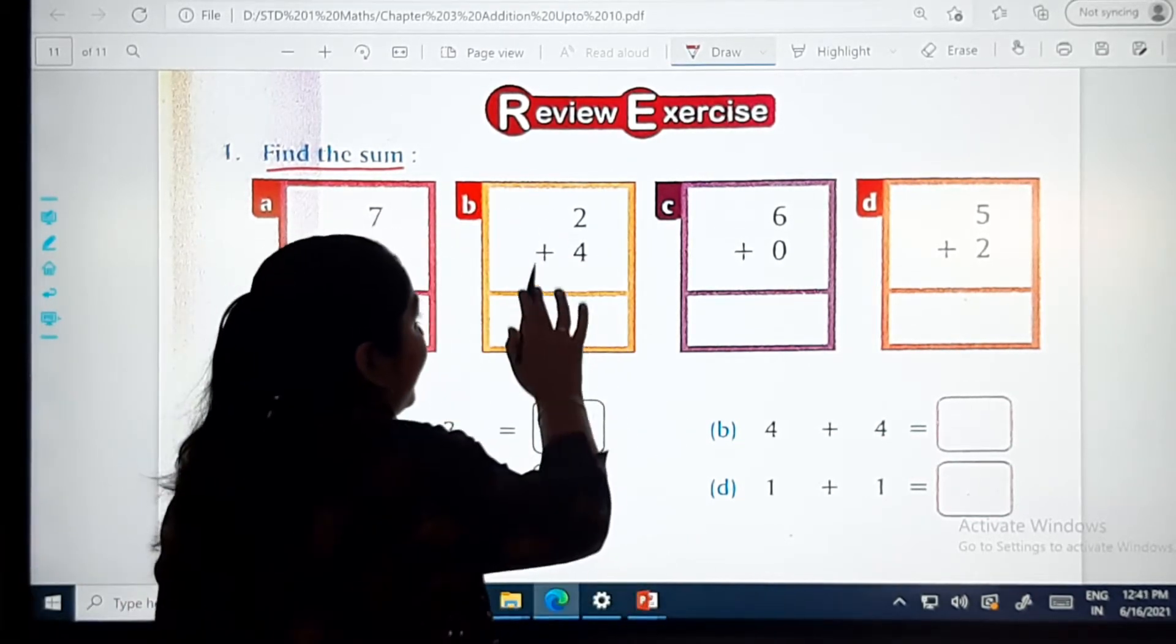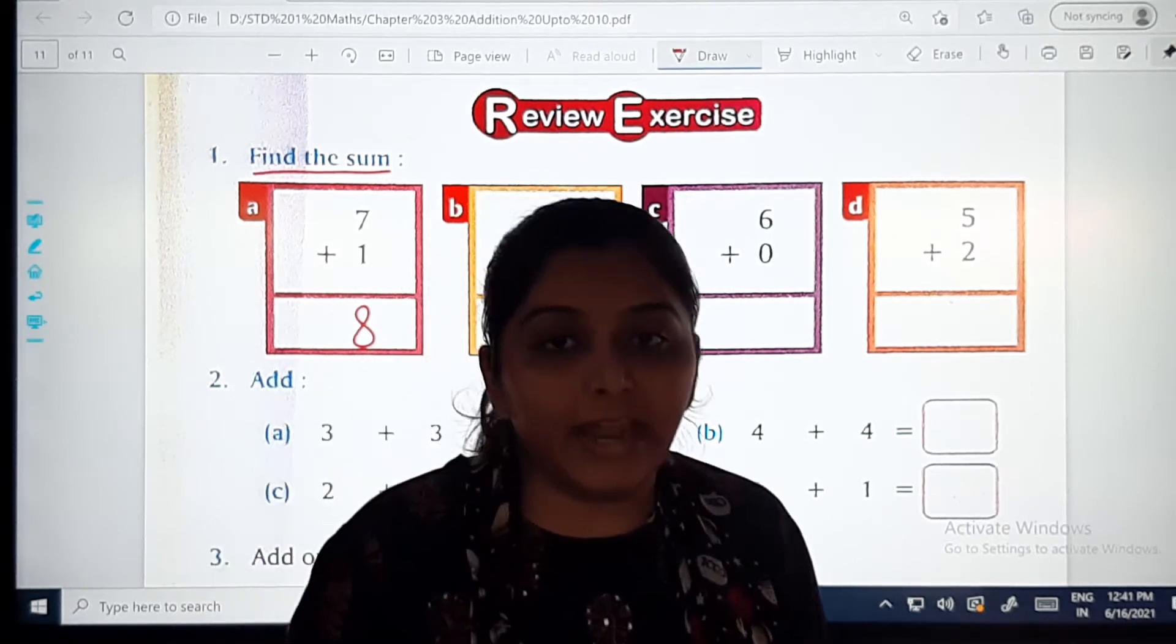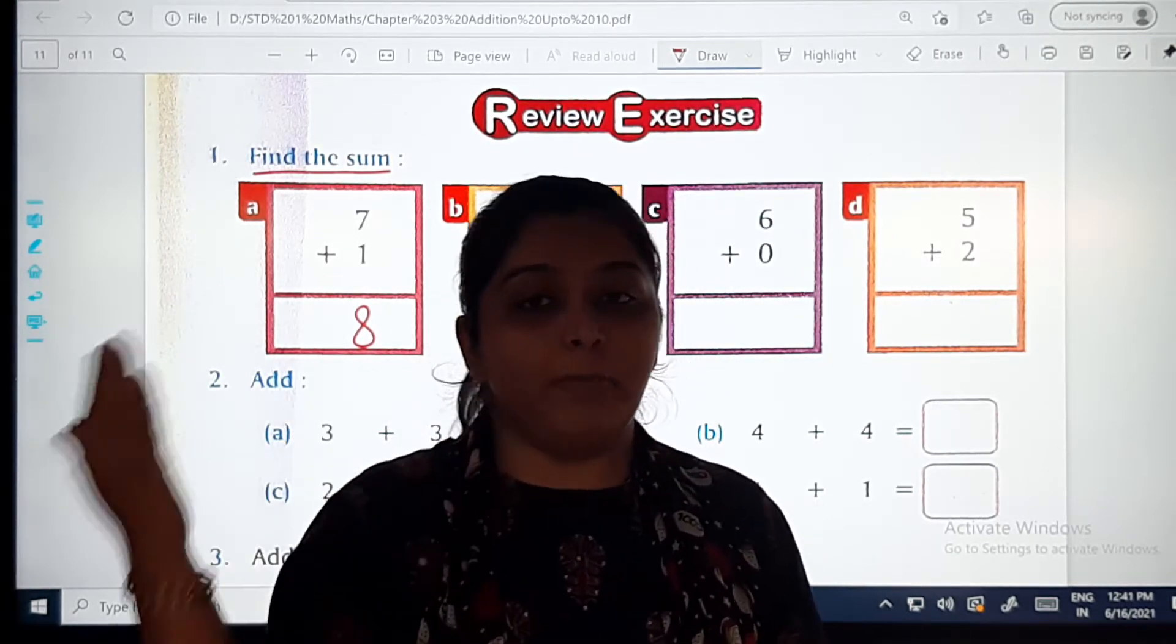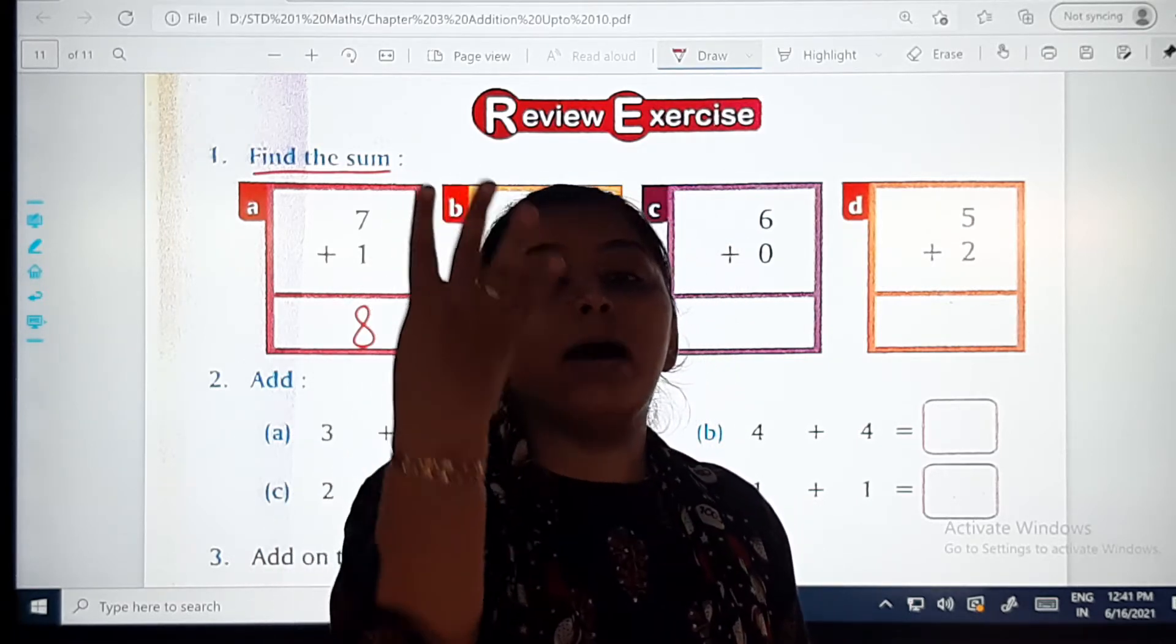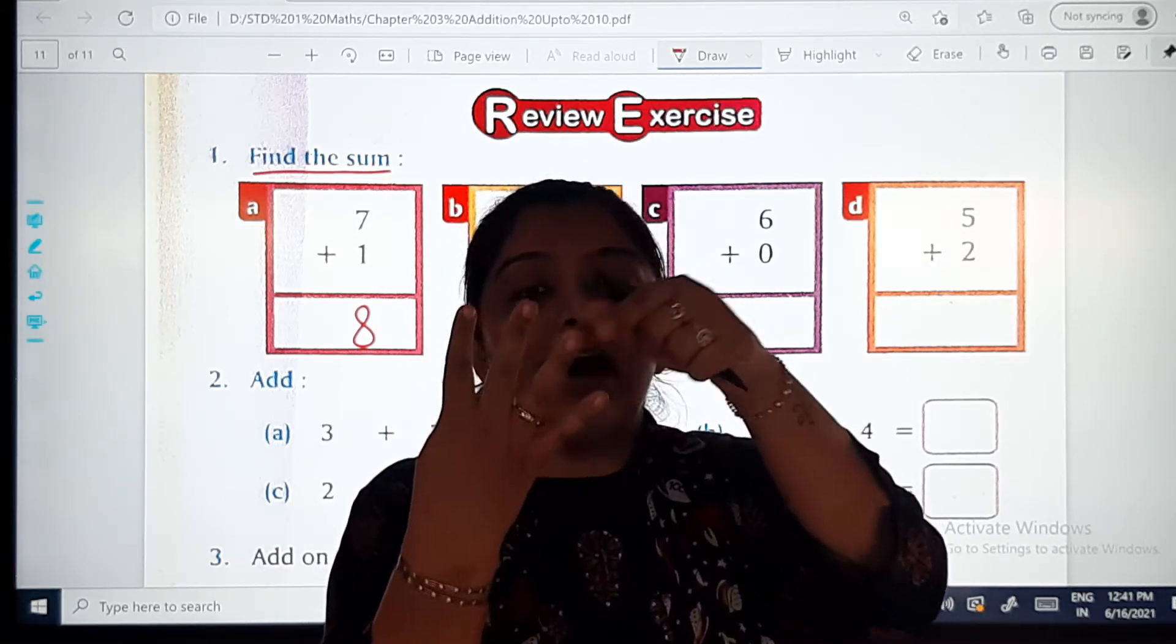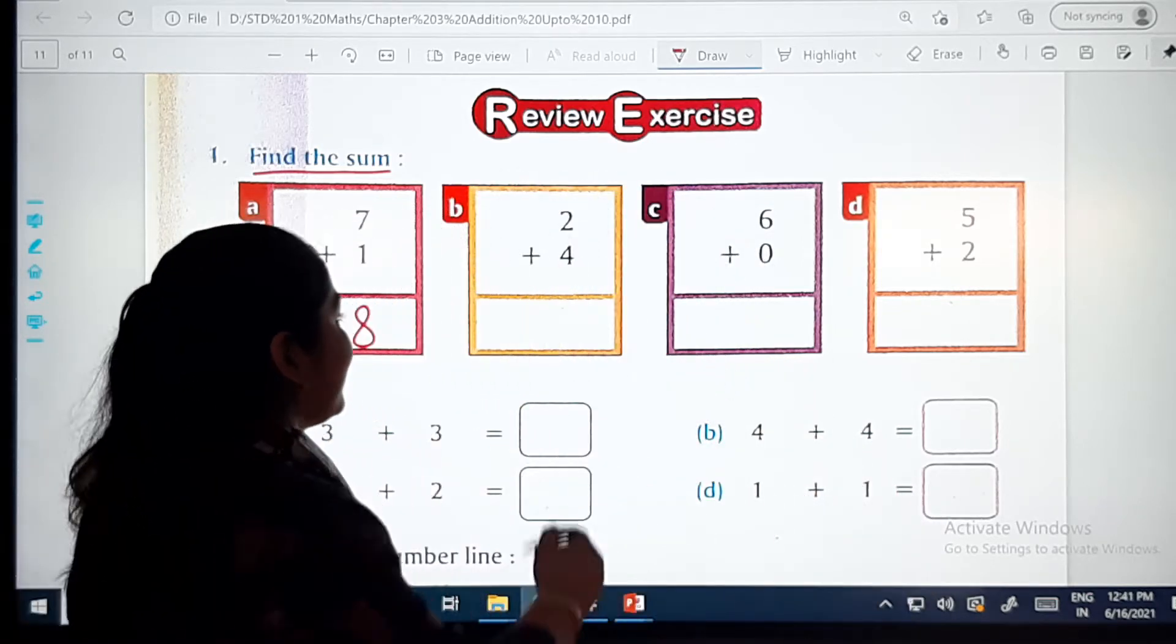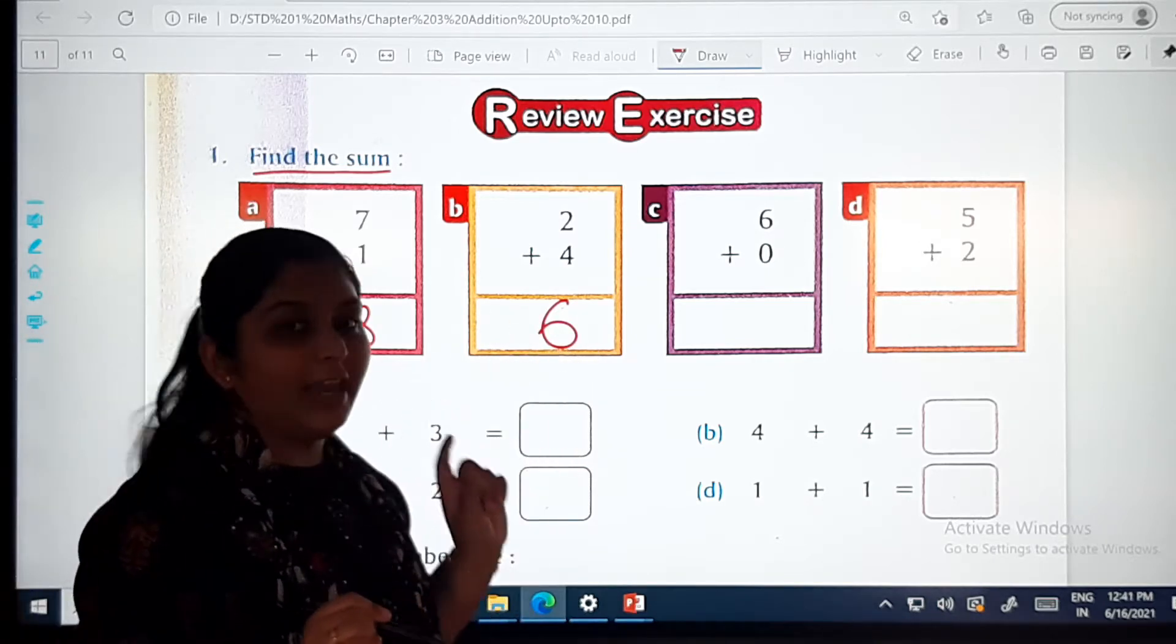Second one: two plus four. Take two as a base. Two ko hum ko base lenge and us mein hum 4 add karenge. That is three, four, five and six. So six will be your answer. Like this, you will write it here like this.